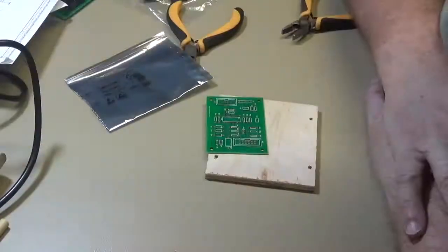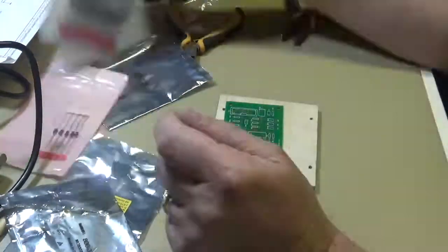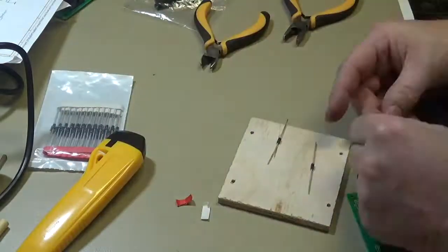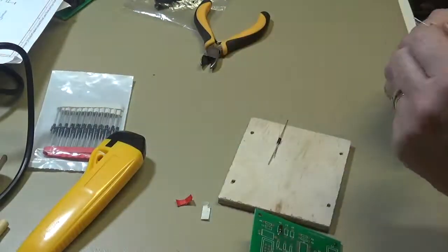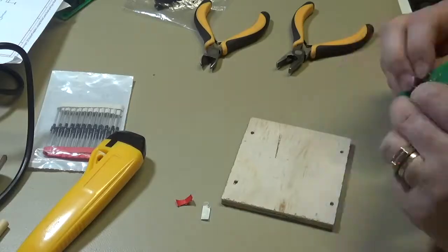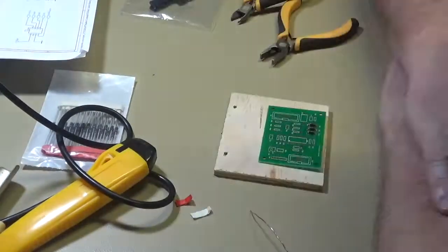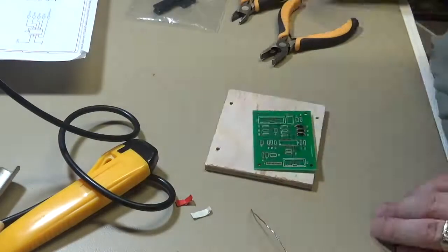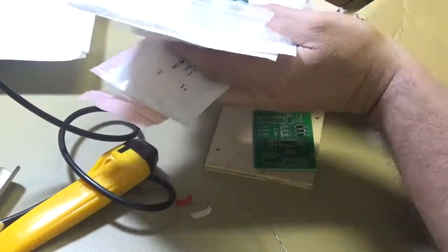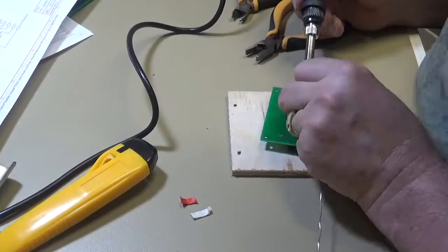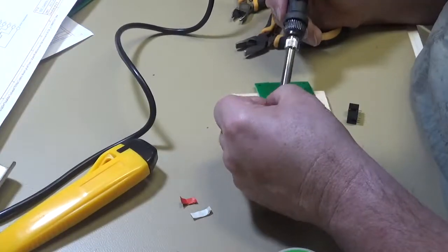Next came the control board. The control board's got a combination of surface mount components and through-hole. Never actually installed any surface mount components before, so I actually started off with a few of the through-hole components.